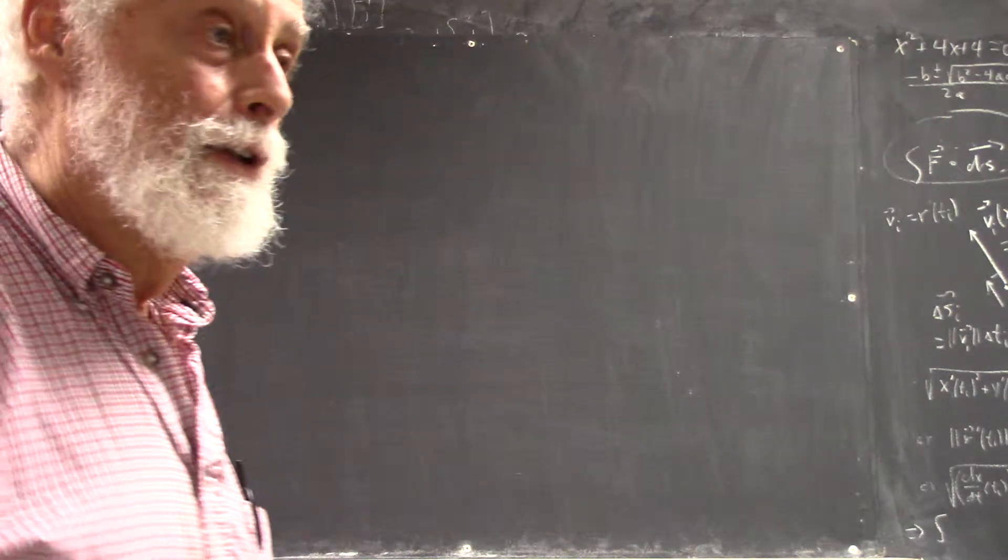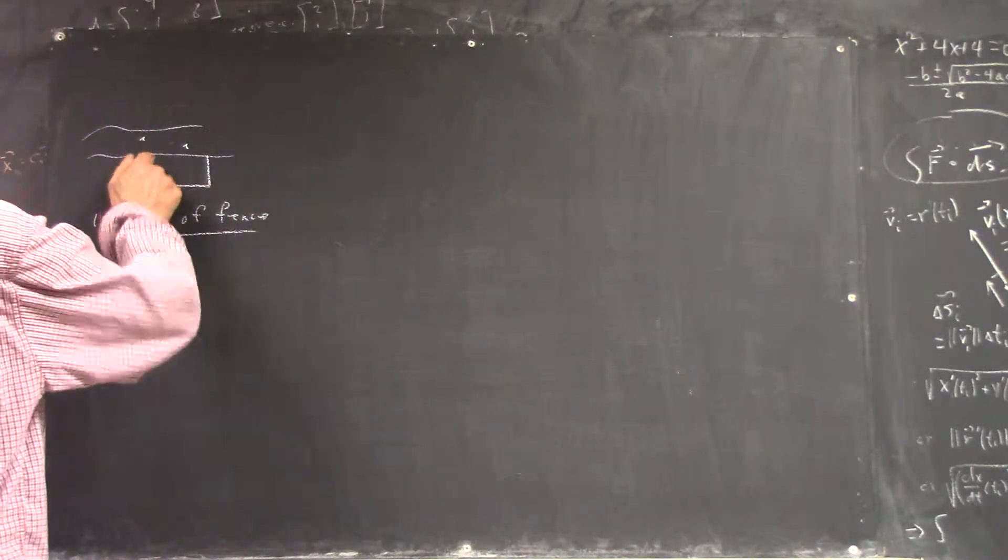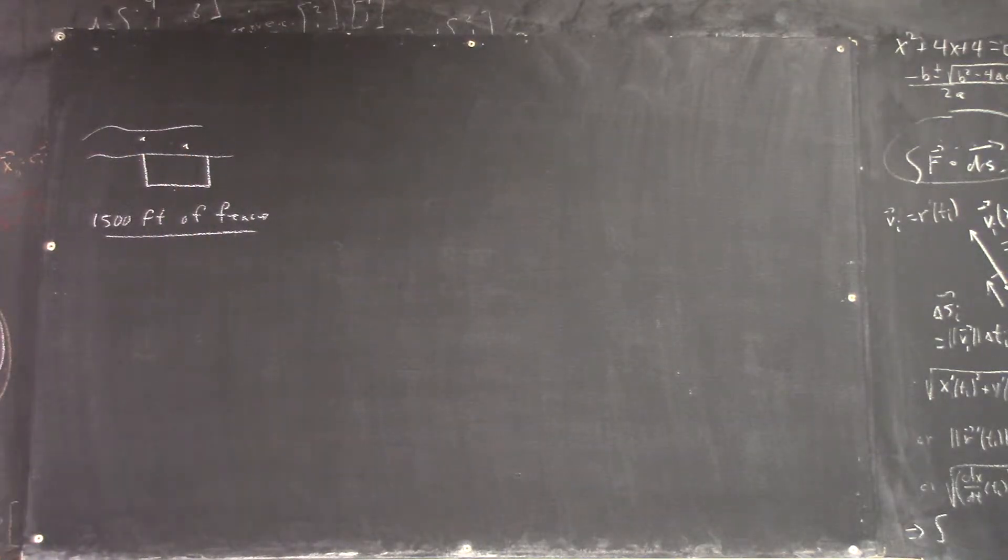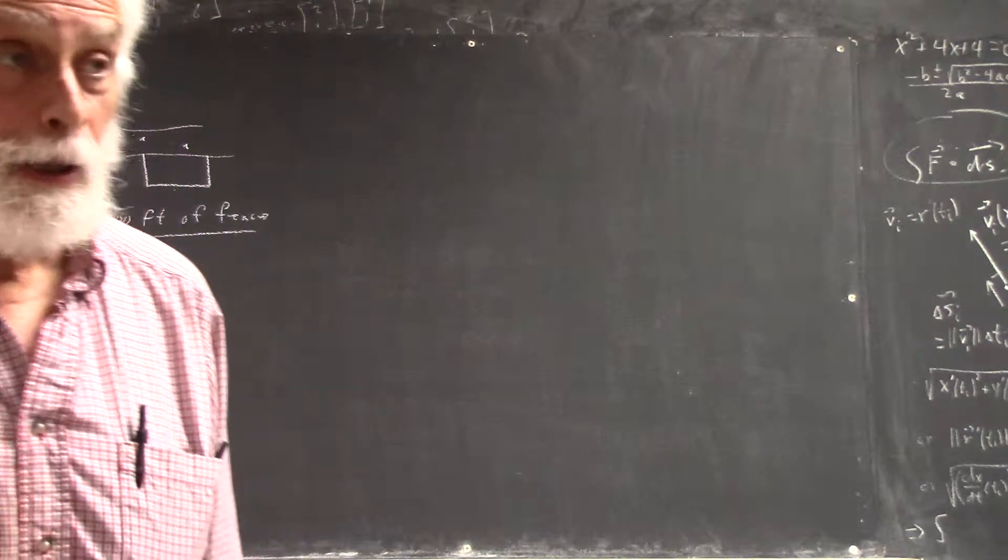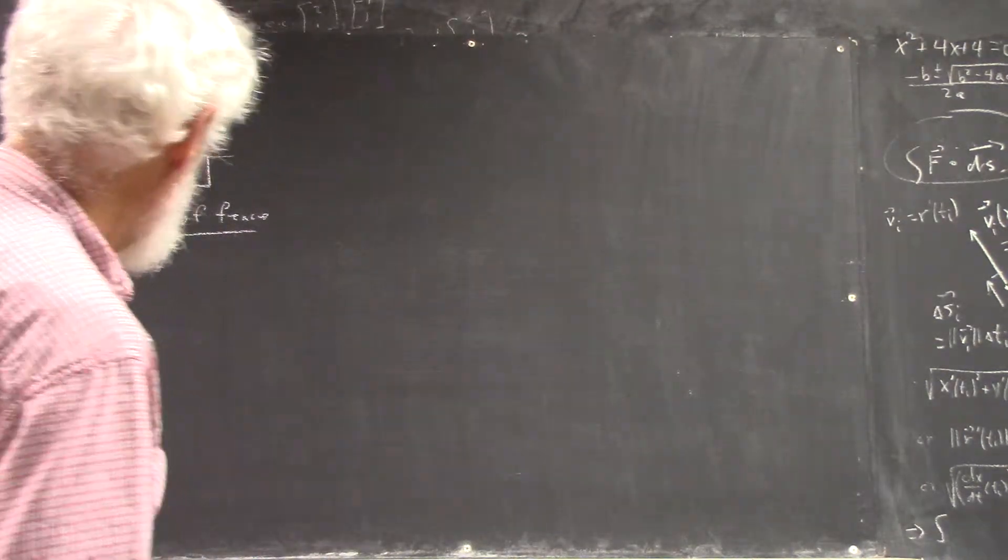The question is, how are you going to divide it up? You could do something like this, you could make it square, you could make it long and narrow this way. How are you going to divide it up to get the maximum possible area? Okay, well, it's the last day, I'm not going to drag it out of you.